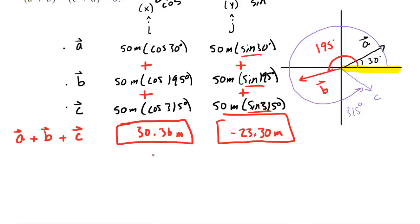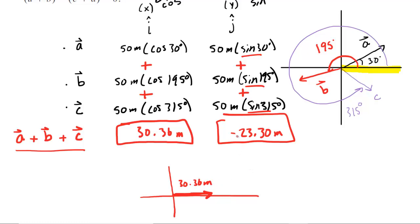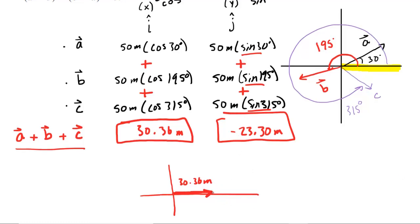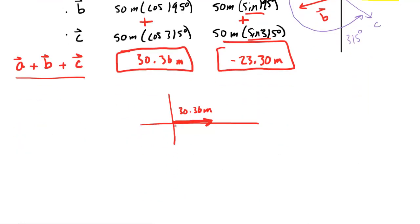Now, in order to interpret the x and y-components of the sum of the three vectors, you should sketch a new triangle. The x-component is positive 30.36 meters, so you extend a vector along the positive x-axis. Your y-component is negative 23.30 meters, so because it's negative, you point it downward — and importantly, do it from the head, or tip, of that vector you've already drawn. So your negative 23.30 meters goes right there, and the magnitude of A plus B plus C is this resultant vector.